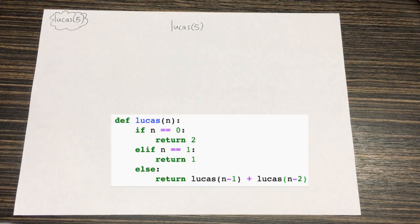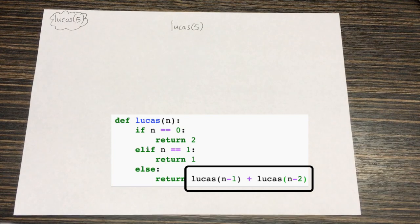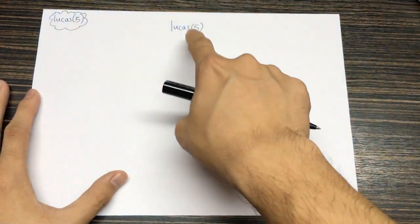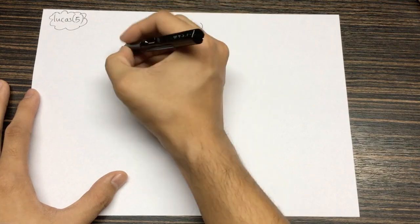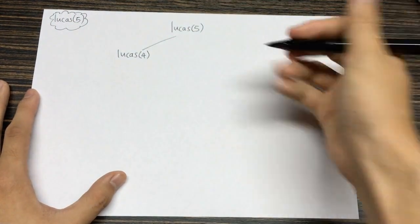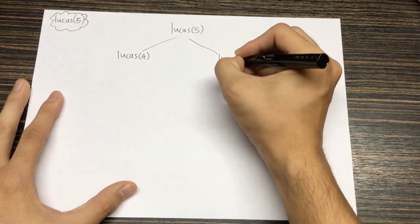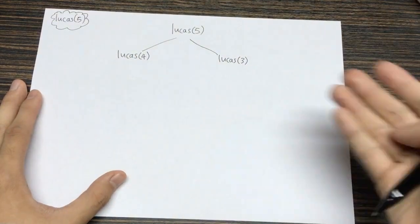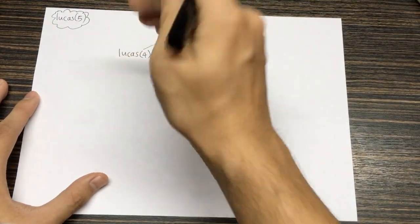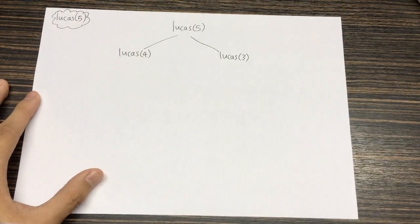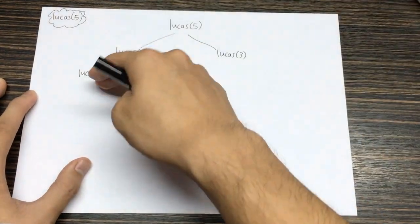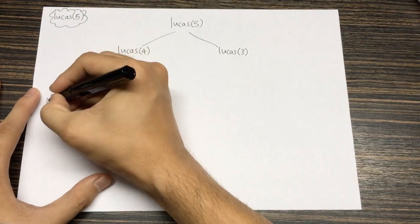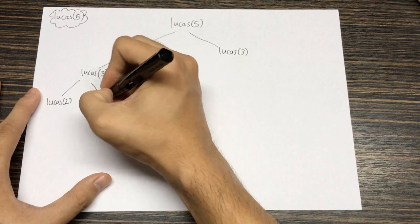At the top, I'm obviously going to have to call Lucas(5) itself to start the whole thing. Now let's think back to the code — the code finding the Lucas numbers requires us to find the previous two Lucas numbers. So Lucas(5) is going to have to call Lucas(4) to find the fourth Lucas number, and it's going to have to call Lucas(3) to find the third Lucas number. But Lucas(4) itself also has to call another function, because in order to find the fourth Lucas number, we have to find the third Lucas number and then the second Lucas number. And the third Lucas number also has to call on Lucas(2) and Lucas(1).